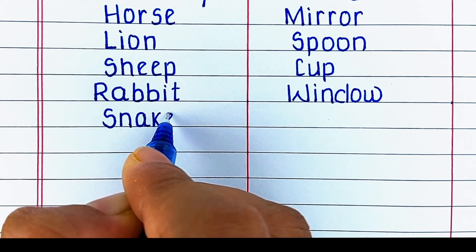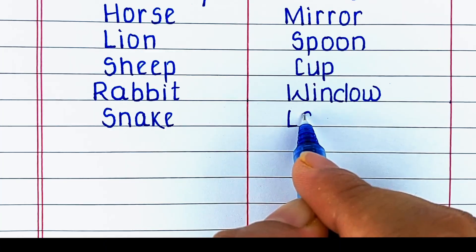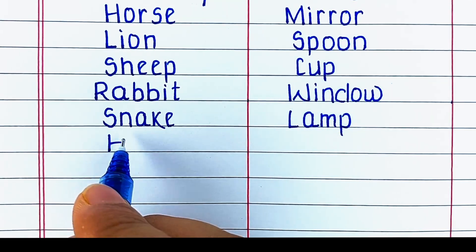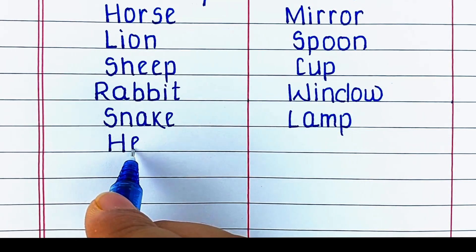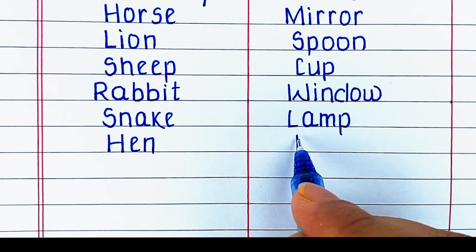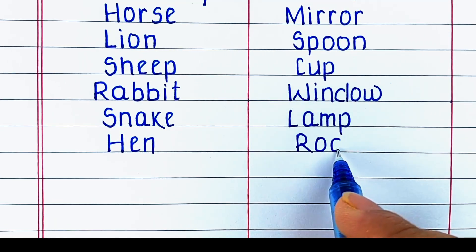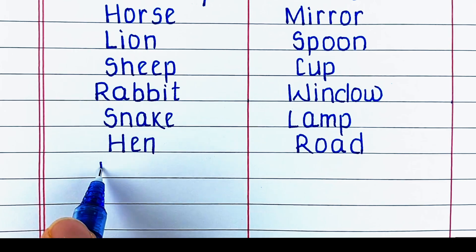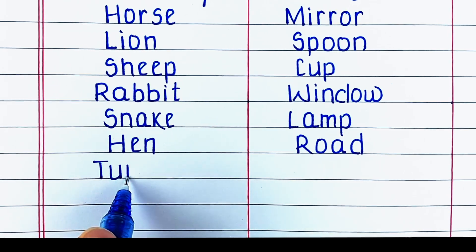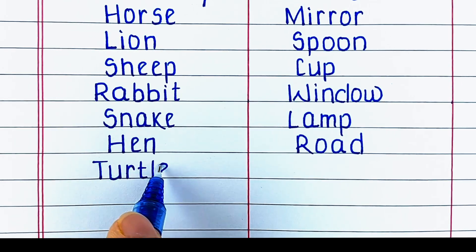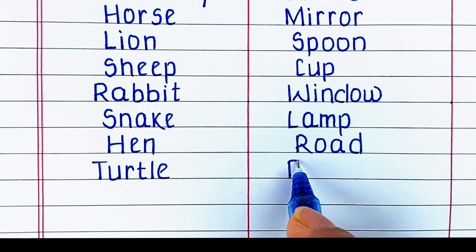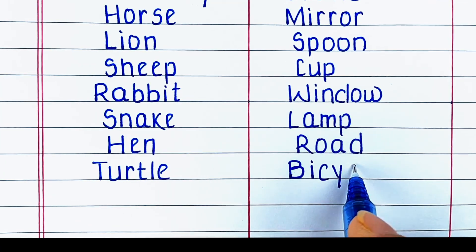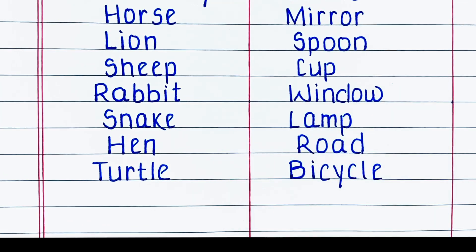Next living thing is snake. Next non-living thing is lamp. Next living thing is hen. Next non-living thing is road. Next living thing is turtle. Next non-living thing is bicycle.